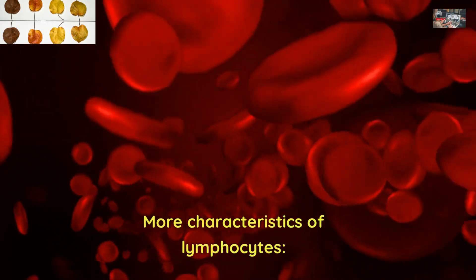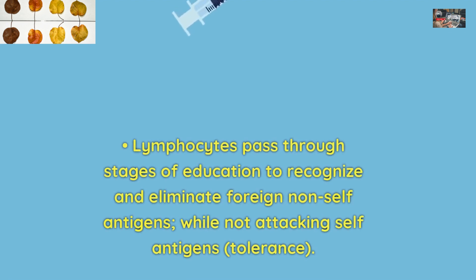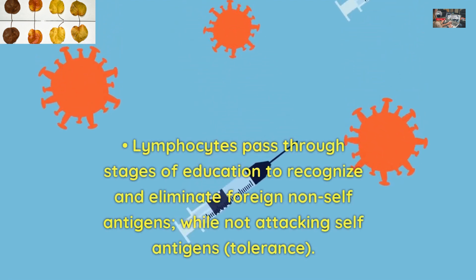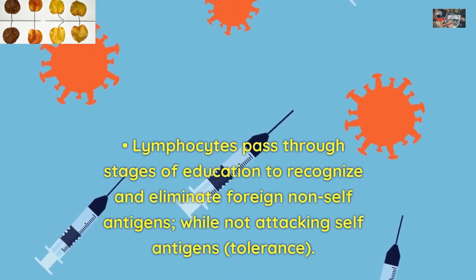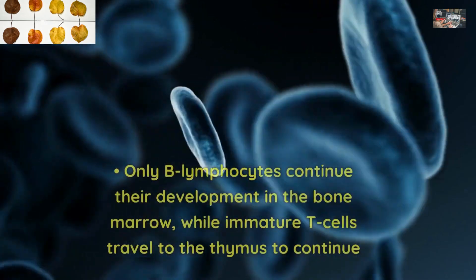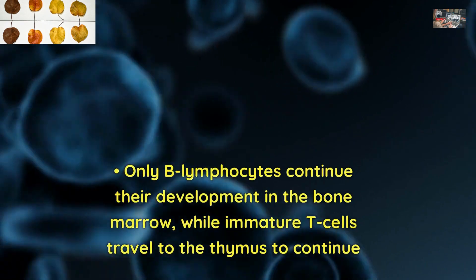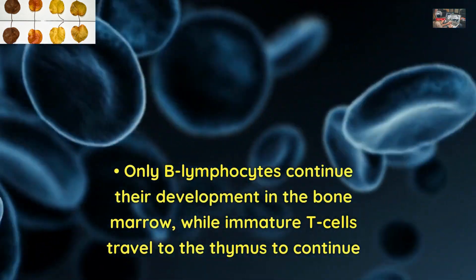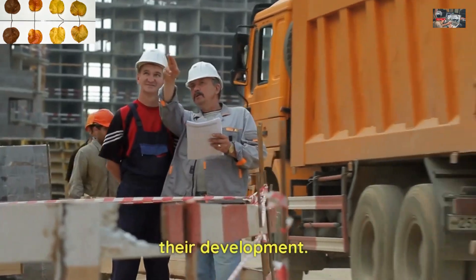More characteristics of lymphocytes: Lymphocytes pass through stages of education to recognize and eliminate foreign non-self antigens, while not attacking self-antigens — tolerance. Only B-lymphocytes continue their development in the bone marrow, while immature T-cells travel to the thymus to continue their development.